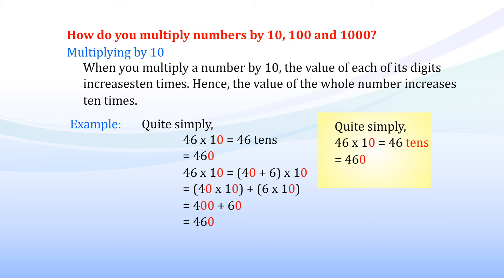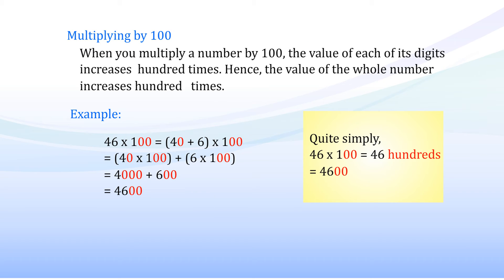Multiplying by 100: when you multiply a number by 100, the value of each of its digits increases 100 times, hence the value of the whole number increases 100 times. Example: 46 × 100 = (40 + 6) × 100 = (40 × 100) + (6 × 100) = 4,000 + 600 = 4,600.